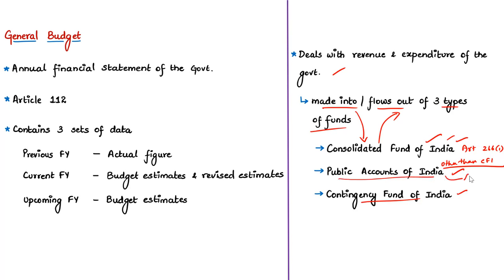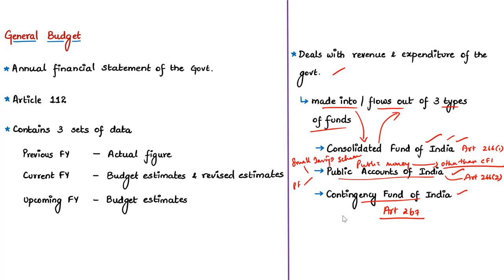Article 266 clause 2 mentions the Public Accounts of India — all public money received other than those included in the Consolidated Fund goes here, typically consisting of money raised through small savings schemes and provident funds. The Contingency Fund is mentioned under Article 267 and is placed at the disposal of the President. Its objective is to meet unforeseen expenditures, after which the President gets parliamentary approval. These are the three types of funds.